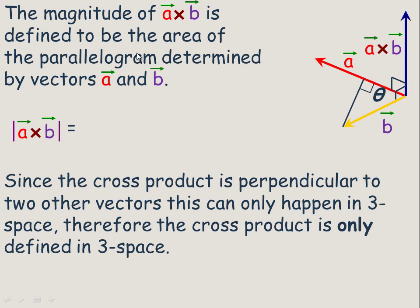Now the magnitude of the cross product is defined to be the area of the parallelogram determined by vectors a and b. So we draw in another a and another b. The length of that cross product is defined to be the area of this parallelogram.